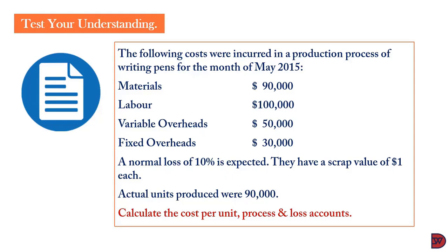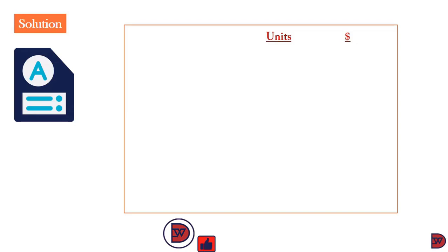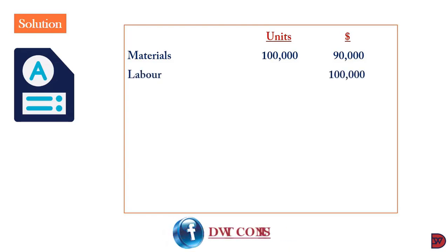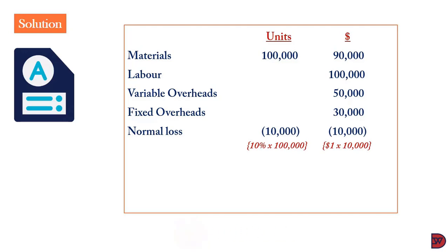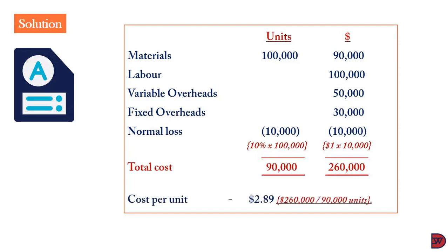Material: 100,000 units, $90,000. Labor $100,000. Variable overheads $50,000. Fixed overheads $30,000. Normal loss will be 10,000 units at a scrap value of $10,000. That is a scrap of $1 times the units of 10,000, being less as explained in the costing process. This will lead to a total of 90,000 units and $260,000. The cost per unit in this instance will be $2.89.